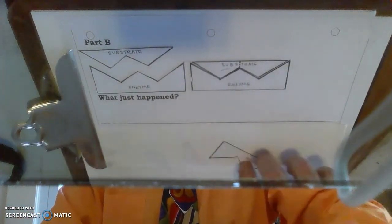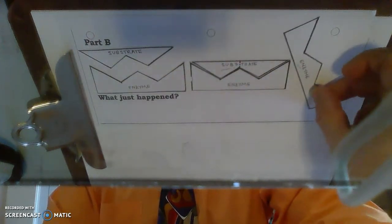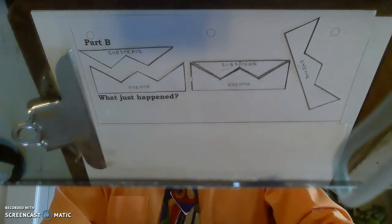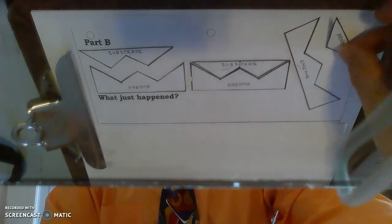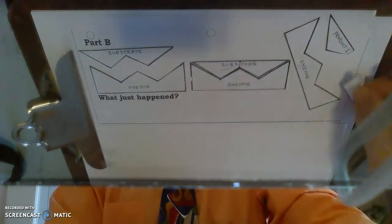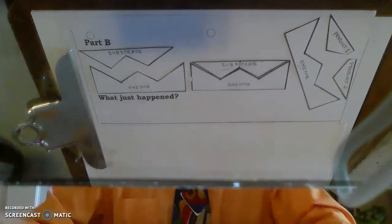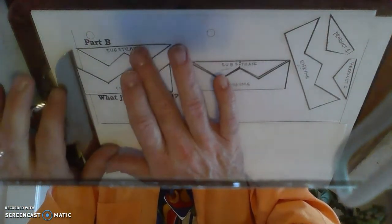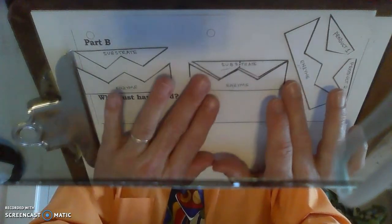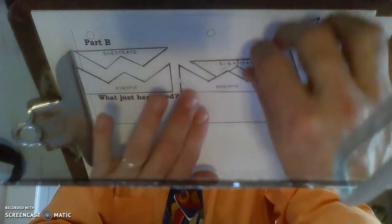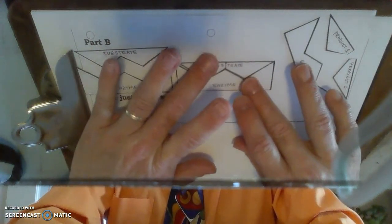And then, in the last part, it says enzyme plus product 1 plus product 2, meaning that they're also separated. So when you cut out all the things, you're going to put them all together like that. It doesn't actually have to be oriented this way, but there's not a lot of space. Fit it however best you can.